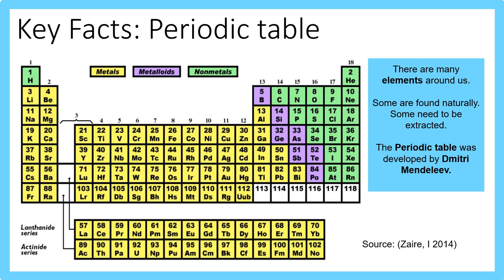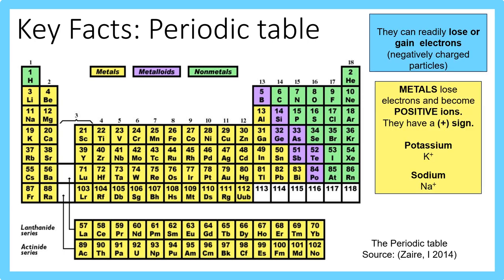The periodic table was developed by chemist Dmitri Mendeleev. This is where you can find all of the elements to date, positioned based on their chemical and physical properties. Some are found naturally and some need to be extracted — such as from an ore.